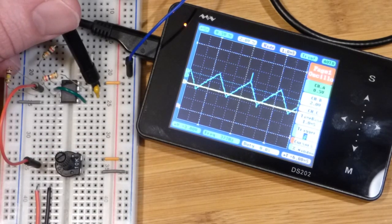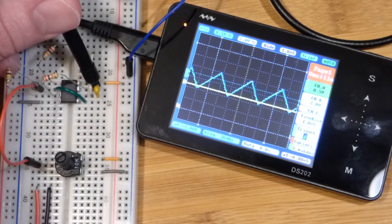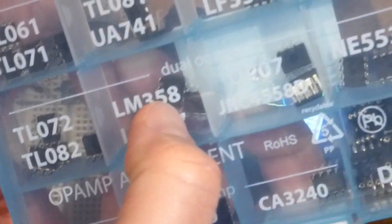So now, this op amp here has two outputs. Right now I'm at pin 7. This op amp, by the way, is the LM358.